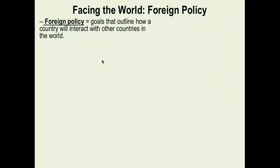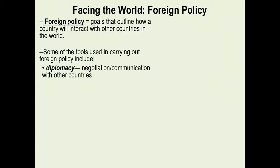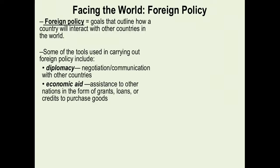Foreign policy quite simply is how the United States interacts with other countries in the world — the opposite of domestic policy, where you focus on your own country. Here are some of the big tools we use to conduct foreign policy. Diplomacy — negotiating and communicating with other countries, whether allies or anyone in between — plays a huge role. Economic aid: we give out a lot of money in grants, loans, and credits as well as materials to countries to help them develop.